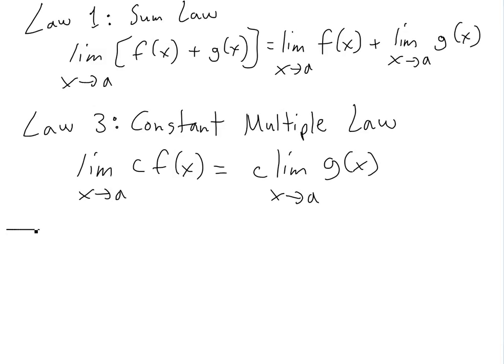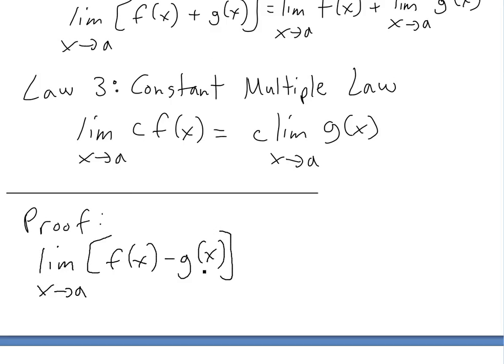We're going to write down the proof by writing this limit of a difference in terms of a sum. We can rewrite it as: limit as x approaches a of f(x) plus (-1)·g(x). This is exactly the same thing; we're just rewriting it.